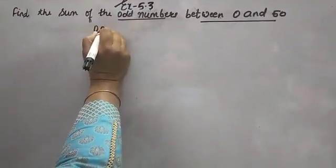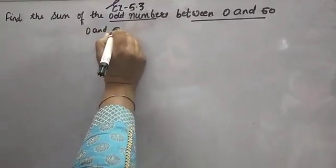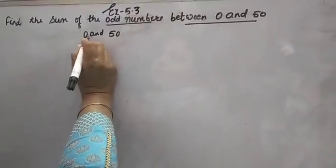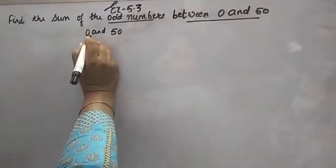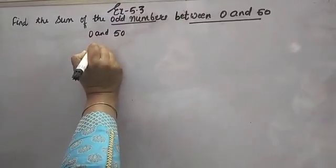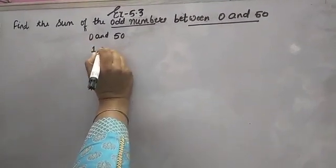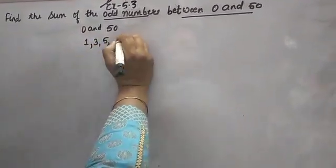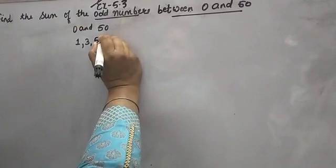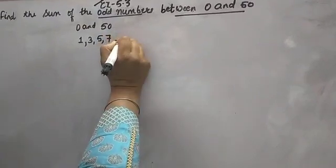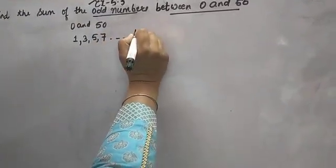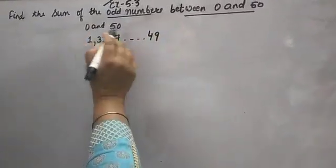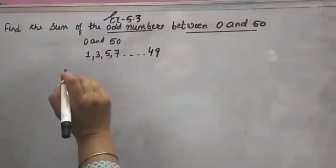Let's look at 0 and 50. Since 0 is not an odd number, the odd numbers between 0 and 50 start from 1 and go up to 49.